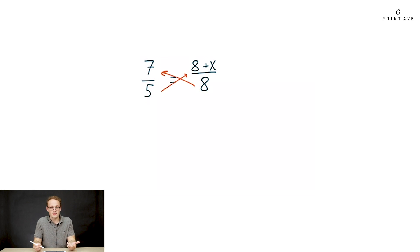So now to solve we simply cross multiply. This gives us the equation 7 times 8 equals 8 plus x times 5 and now we expand, we get 56 equals 40 plus 5x. And then moving over to the other side we just combine the 40 with the 56, we get 16 equals 5x.